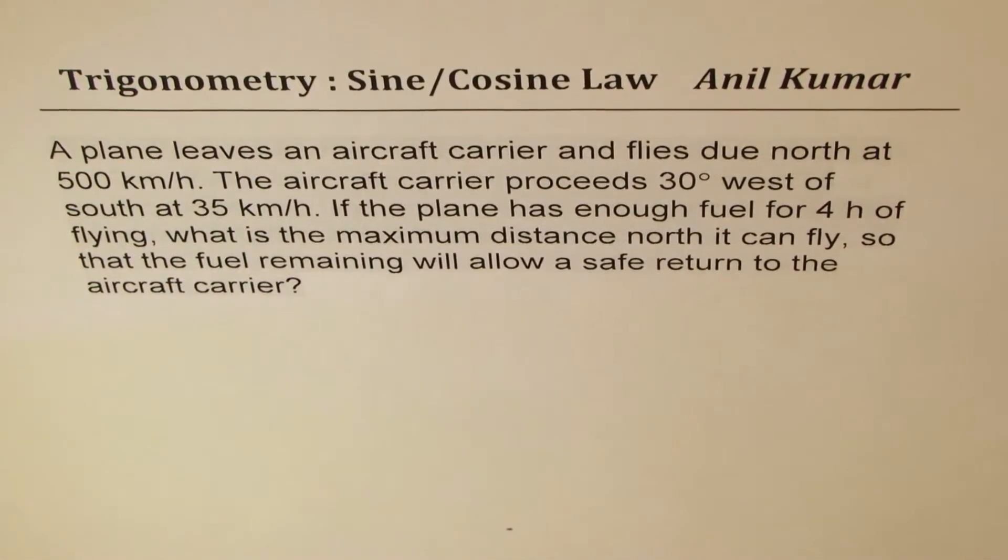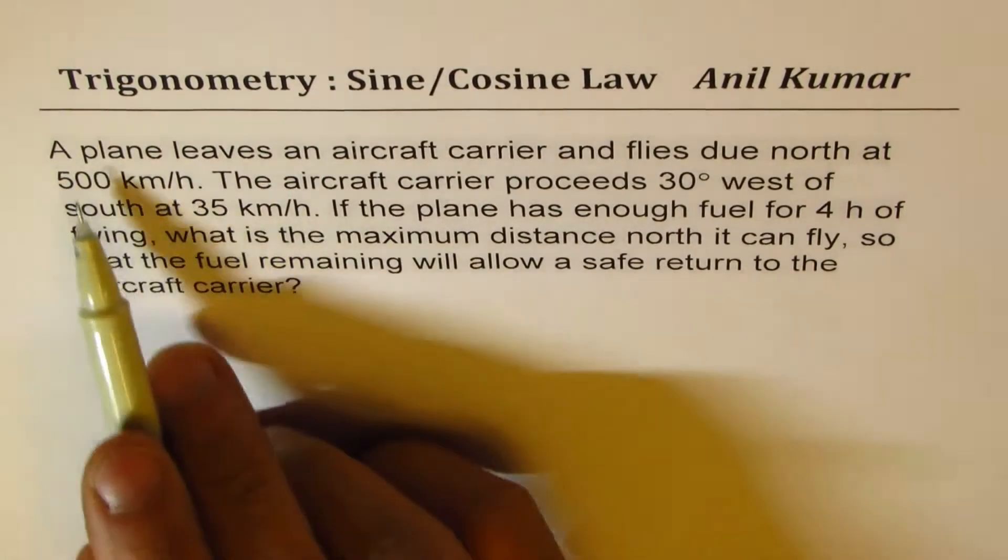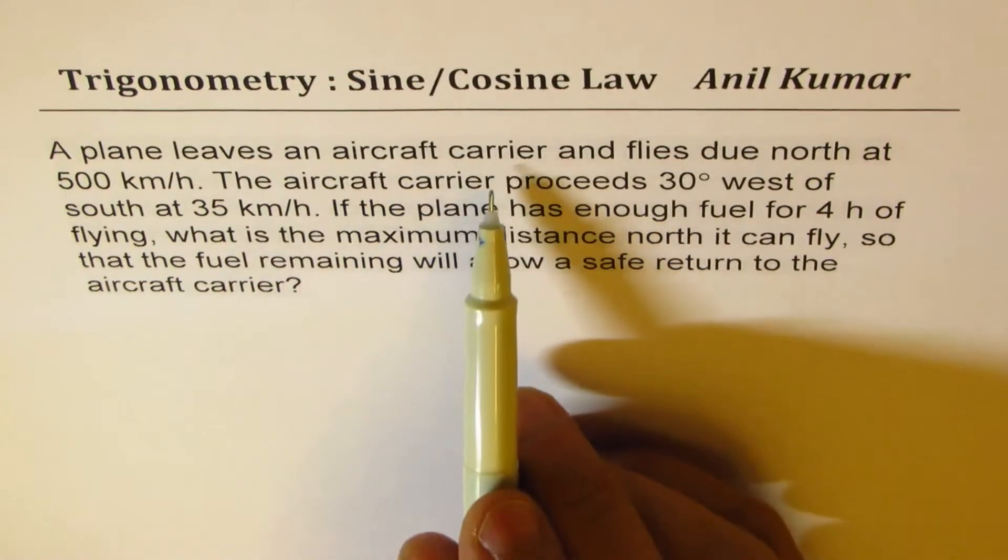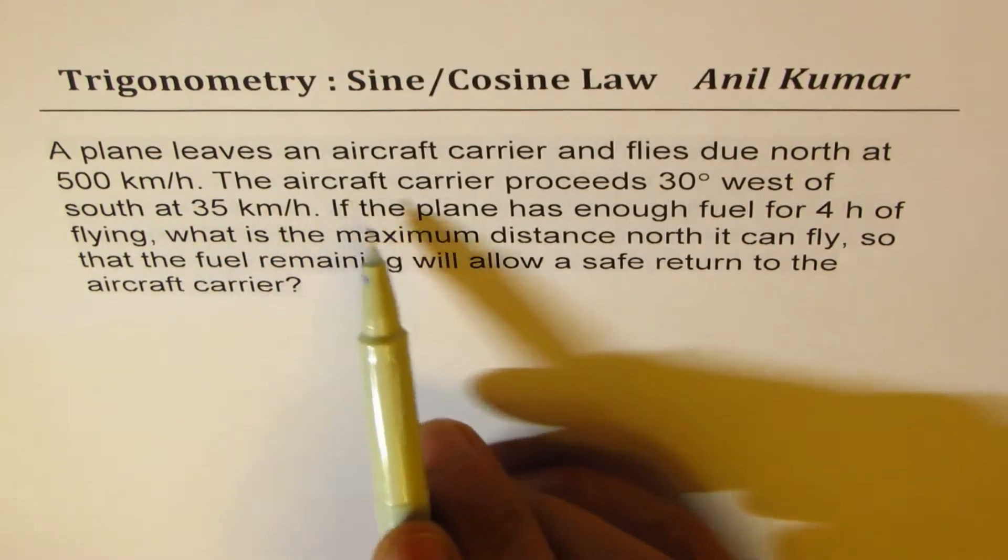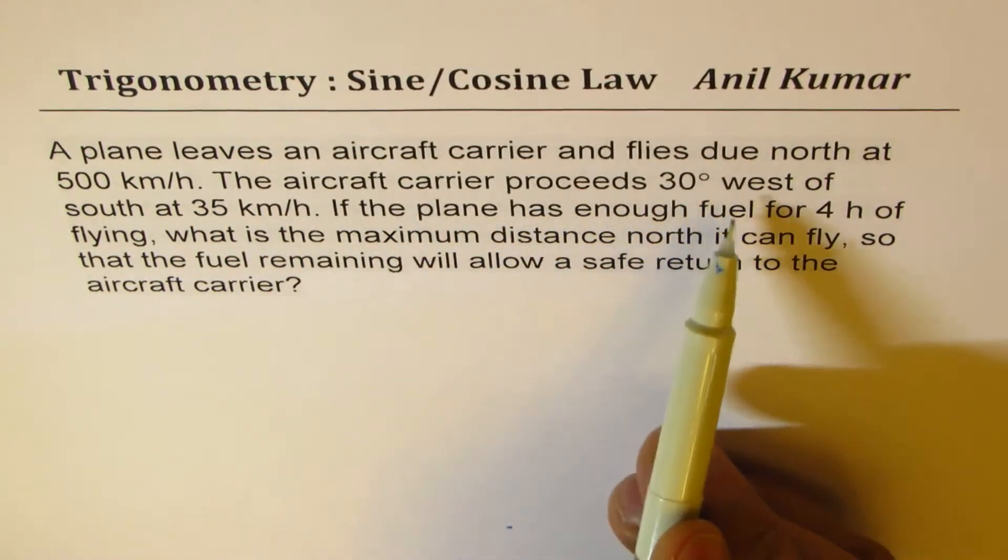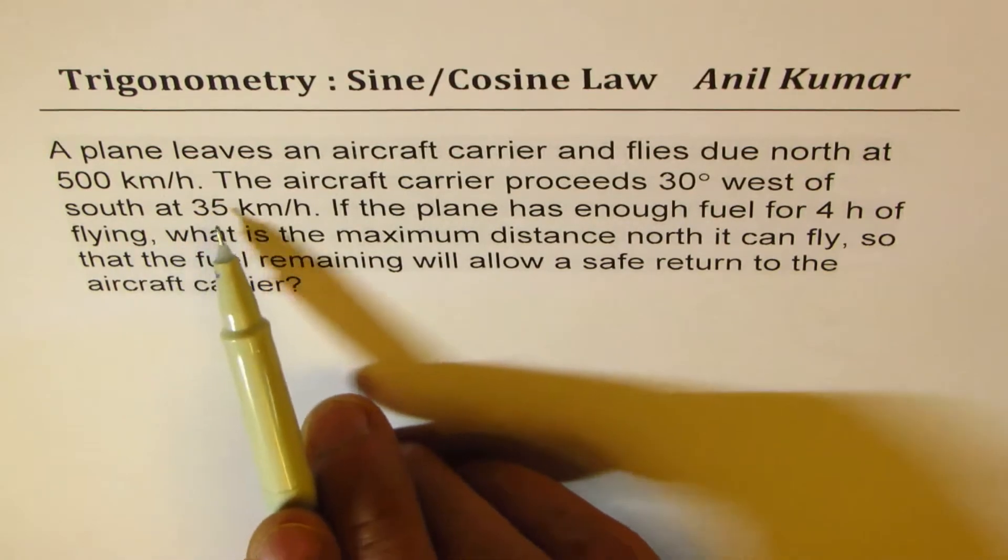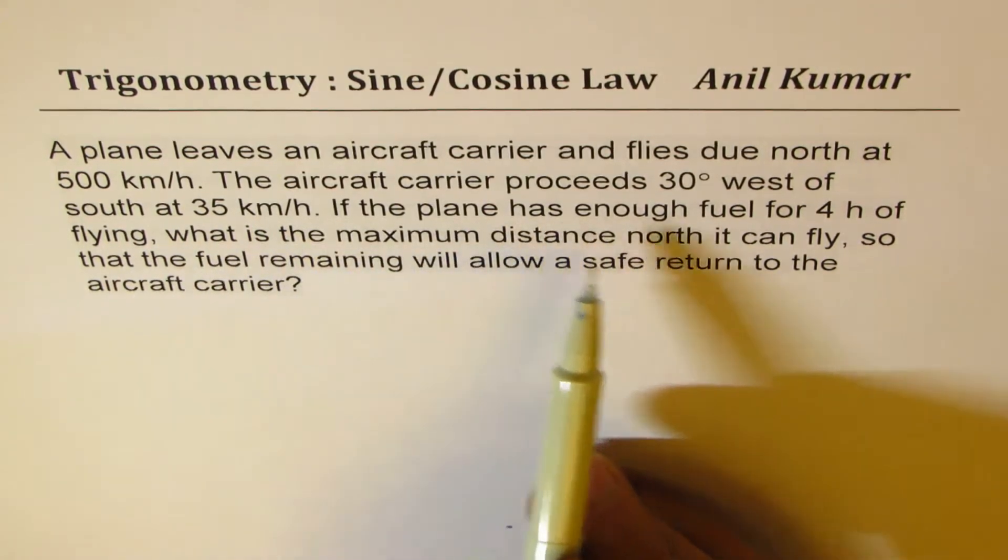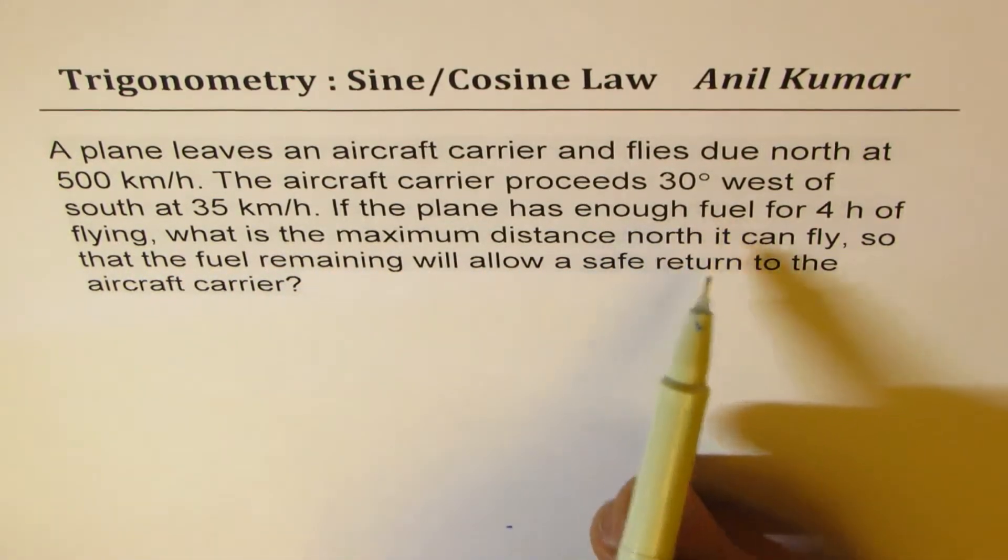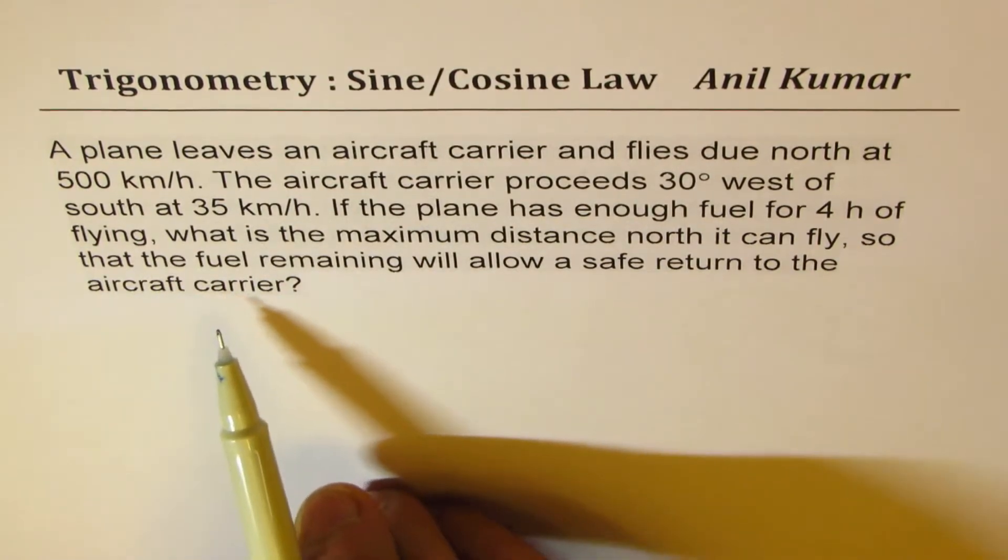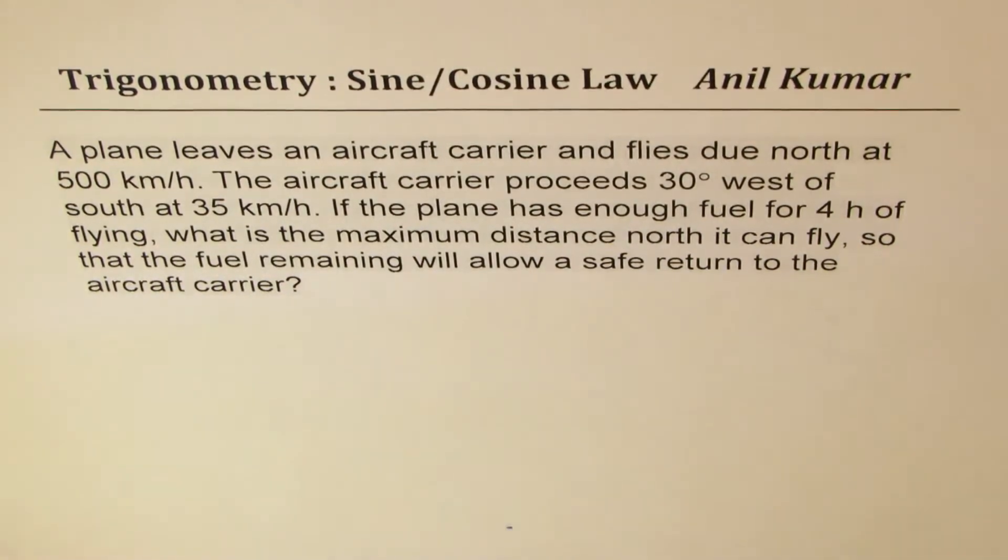I am Anil Kumar sharing with you a test question from my student, Ashwita. I hope the solution of this question will help you all. The question here is, a plane leaves an aircraft carrier and flies due north at 500 kilometers per hour. The aircraft carrier proceeds 30 degrees west of south at 35 kilometers per hour. If the plane has enough fuel for four hours of flying, what is the maximum distance north it can fly so that the fuel remaining will allow a safe return to the aircraft carrier?